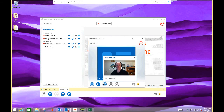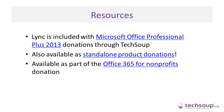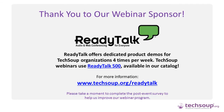Just to remind you, Lync is available in the Microsoft Office Professional 2013 donations through TechSoup. You can also get it as a standalone product donation through the Microsoft program with TechSoup. You can get Lync Server and Lync Client Access License if you want to have it individually installed on machines in your office. And it's available as part of the Office 365 for Nonprofits donations, with I think four different levels available at this point. We'll point you to all of those in the follow-up resources. Thank you Doug for taking the time - we really appreciate you doing this introduction to what Lync is and how you can create and run meetings using this really cool tool. Thanks to Molly and Justin for helping on the back end, and thank you to Allie for helping with managing questions. Thank you to our webinar sponsor today, ReadyTalk, for providing the use of the ReadyTalk 500 platform, also available in our catalog at TechSoup.org/ReadyTalk.